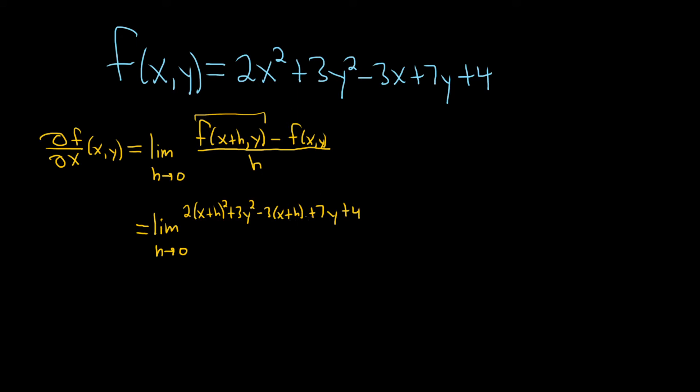And you kept all of the y's the same. And then minus f of x,y, that's the whole thing up here, so I'll just copy it down. 2x squared plus 3y squared minus 3x plus 7y plus 4. And all of this, this entire thing, is being divided by h.